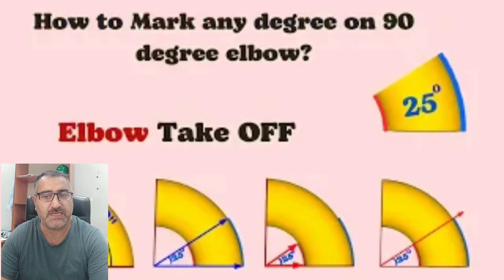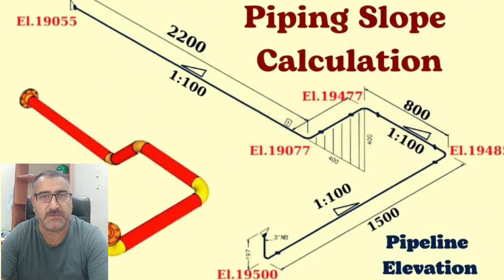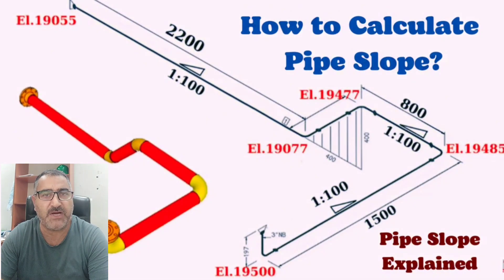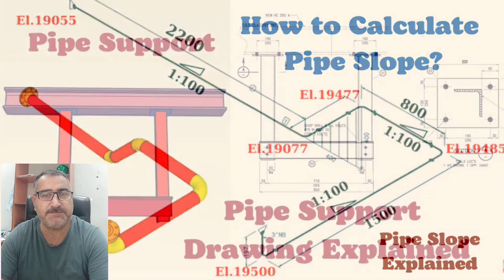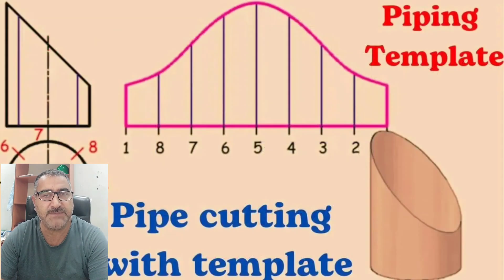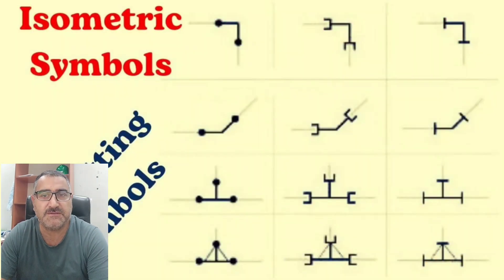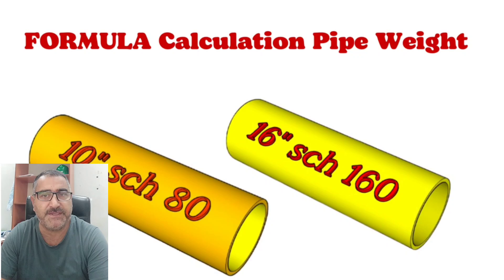How to Mark and Cut Any Degree Elbow from the 90-Degree Elbow, 90-Degree Elbow Dimension, Pipe Slope Calculation, How to Calculate Pipe Slope in the Piping Isometric Drawing, Pipe Support Drawing Explained, Piping Template, Piping Isometric Symbols, Pipe Fitting Symbols, Formula Calculation, and Pipe Weight.